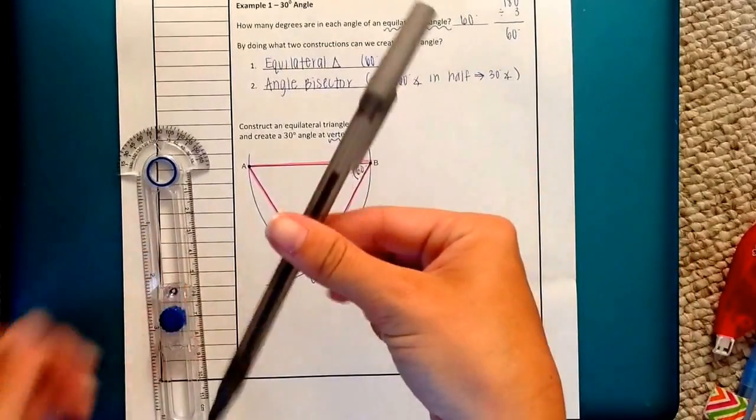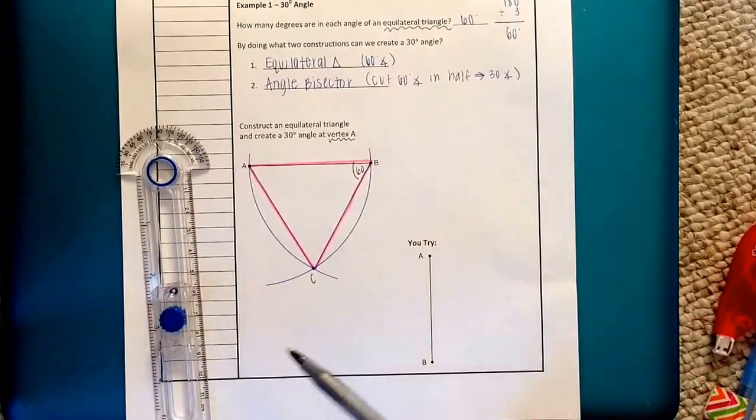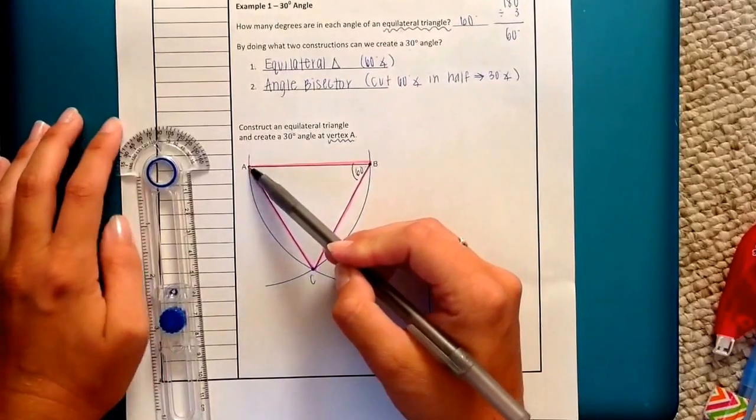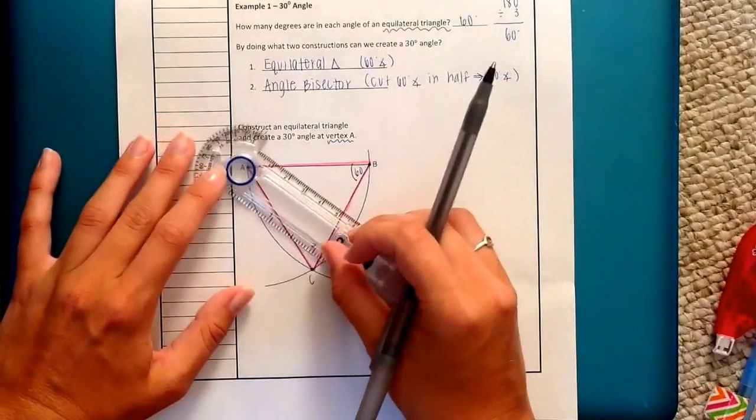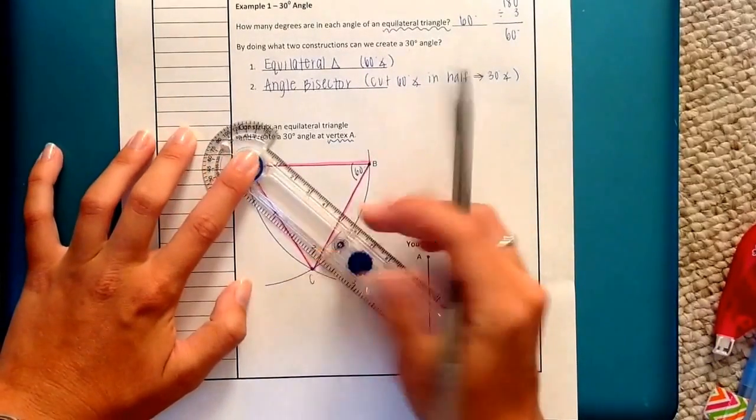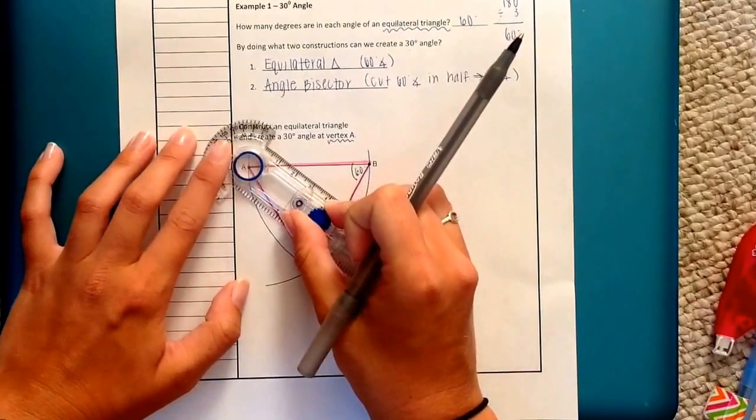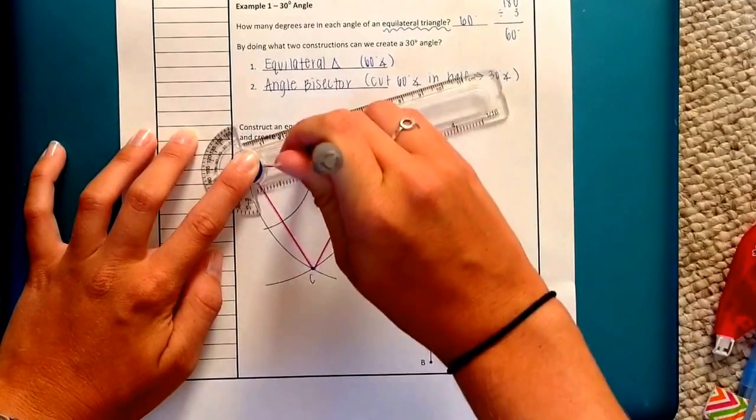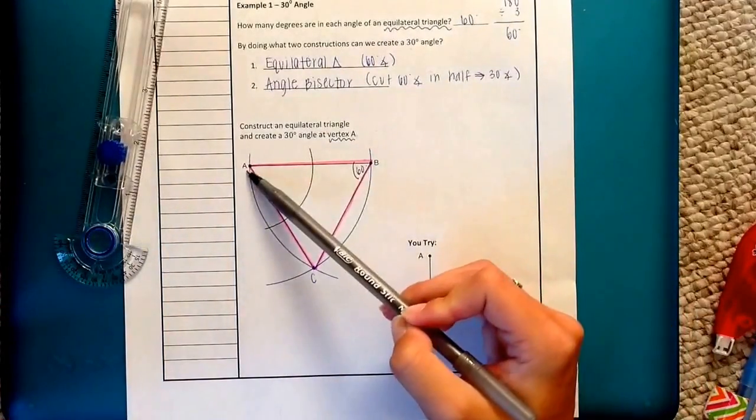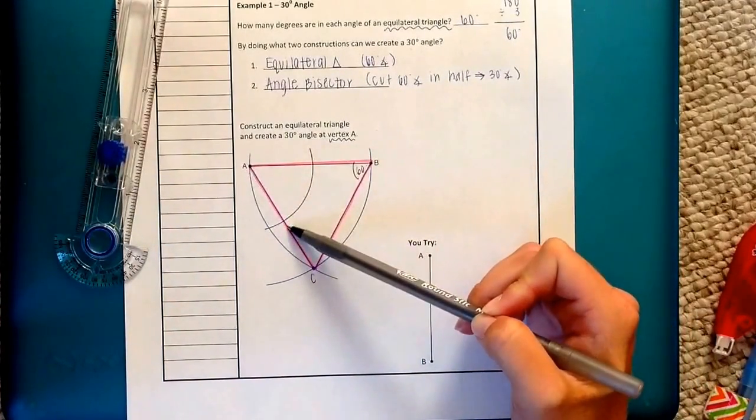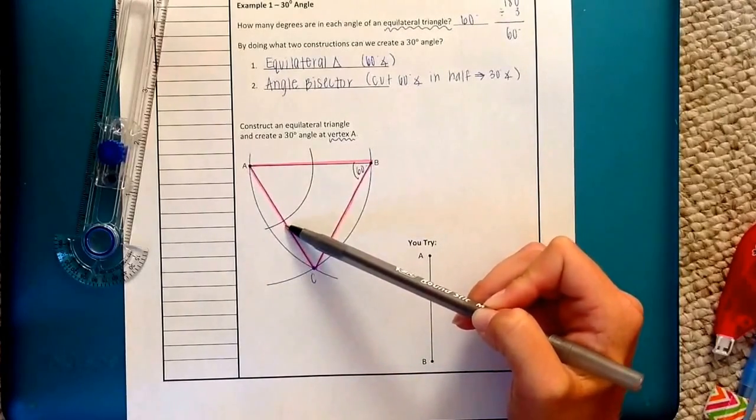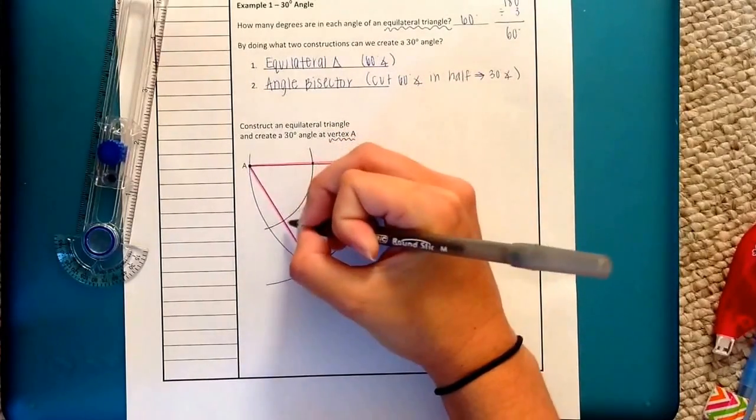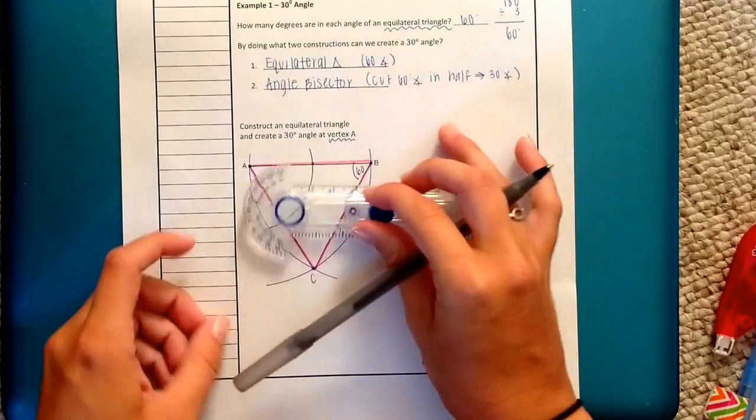So I'm going to change my color. If you have a different color on you that might be helpful so you can see which construction came from which color. I'm going to start by putting my center on A. Remember now we're doing the angle bisector construction. So this is 3 total arcs starting with a smiley arc across both sides of the angle. Center on A. Open up my radius to some measure. Doesn't matter how big or how small as long as you can cross both sides of the angle.